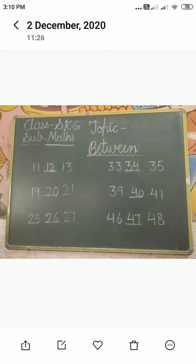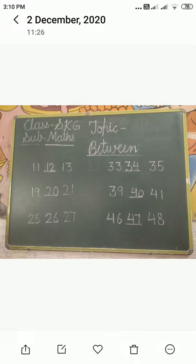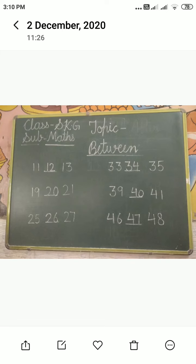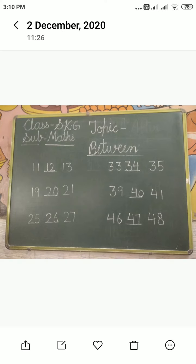33 and 35 — which number has come in between? 34. After 33, 34 and 35. Now, 39, 40 and 41 — 40 is the between number, beach ka number.